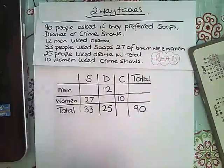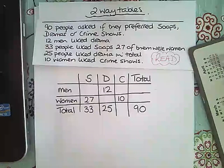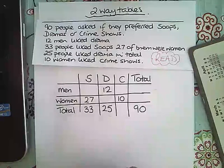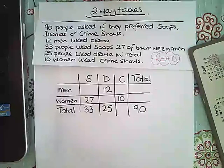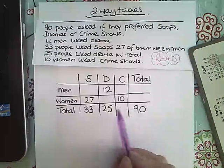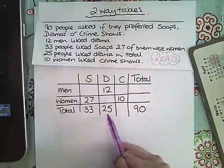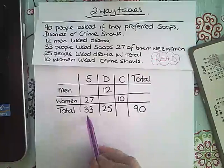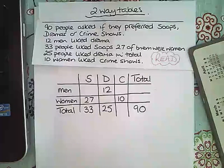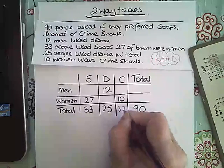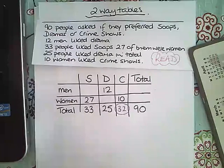Then I either take a different colour pen or pencil and fill in the information that I am going to calculate — and if you've got a calculator you should use one. First of all, there are 90 people in total, so I'm going to do 90 take away 25 take away 33, and that will give me the total for crime, which is 32. I'm going to put a circle around the values I've calculated myself to show what I've filled in.